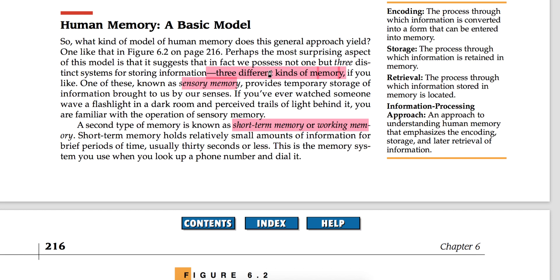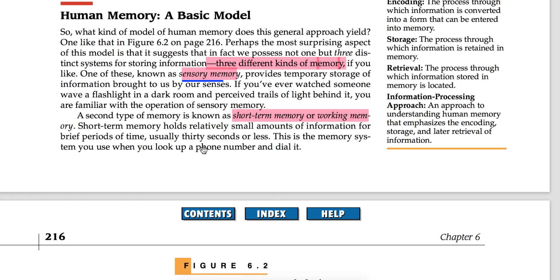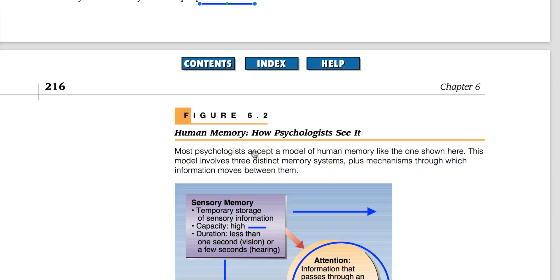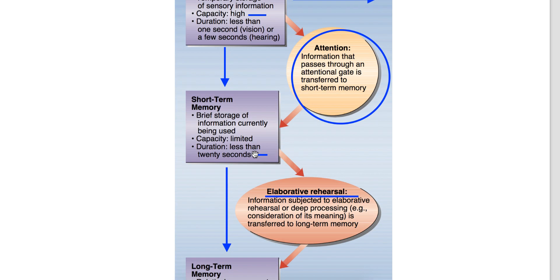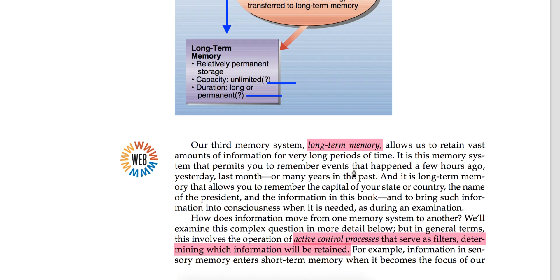So this is the basic model. There is sensory memory, which is temporary storage coming from our senses — like seeing light or hearing something. Then if you have focused on it, it goes into your short-term memory or working memory. It stays in working memory as long as you are focused on it. If you keep working with it for longer, it goes into long-term memory. For example, a phone number — while you are talking about it, it is in working memory. After you stop, you forget it — it doesn't go into long-term memory.